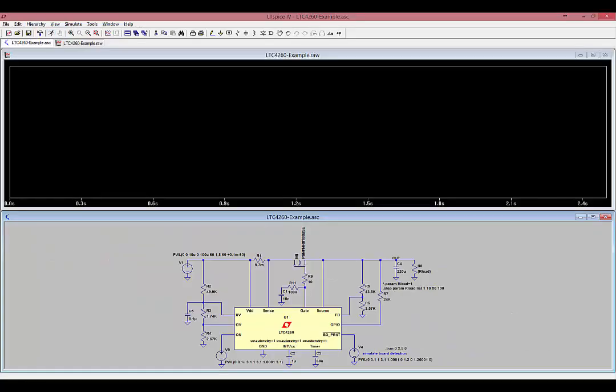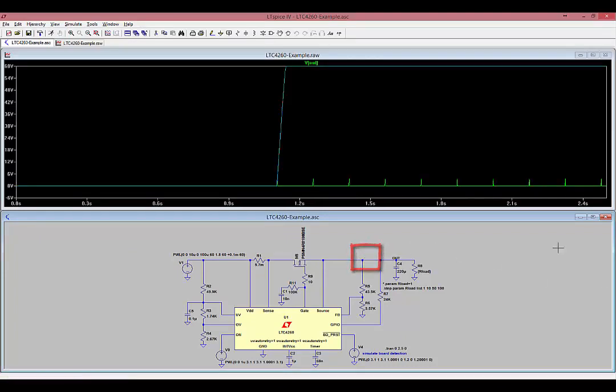It steps through four different loading conditions at the output: 1 ohm, 10 ohms, 50 ohms, and 100 ohms. When you click on the output node, the waveform viewer shows the voltage. The LTC4260 has powered up successfully into the 10, 50, and 100 ohm loads. Into 1 ohm, the LTC4260 detects the excessive loading at the output and prevents the output voltage from ramping up. It retries every 150 milliseconds into the 1 ohm load.